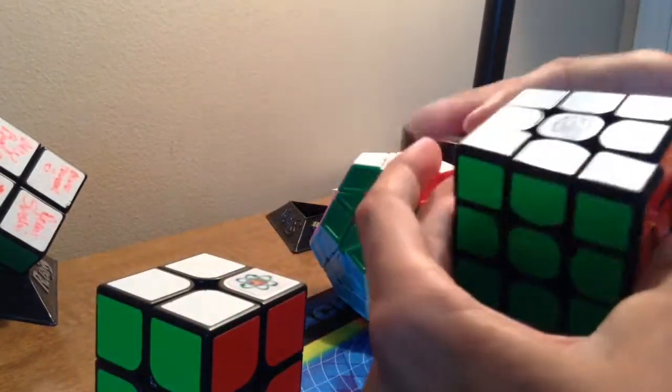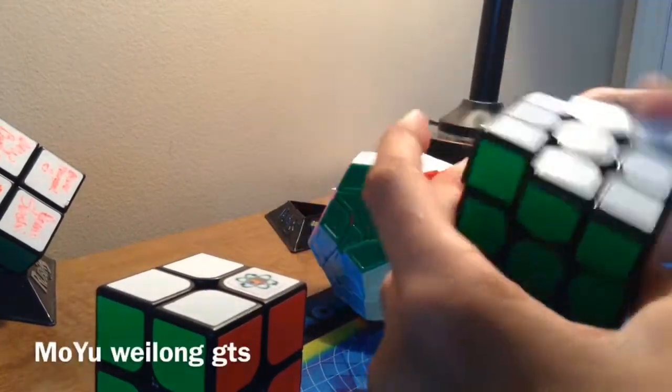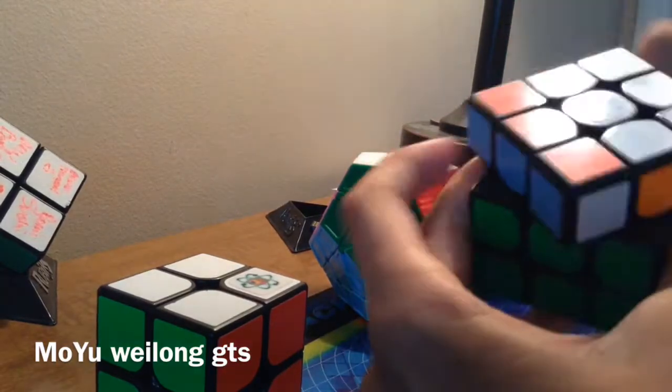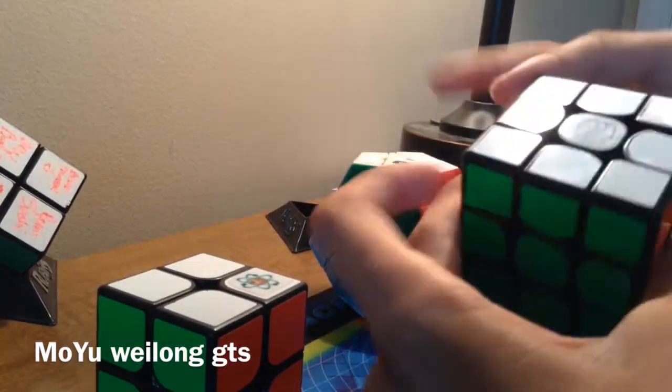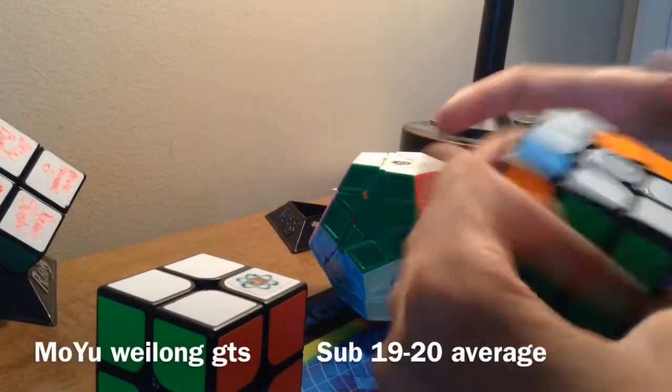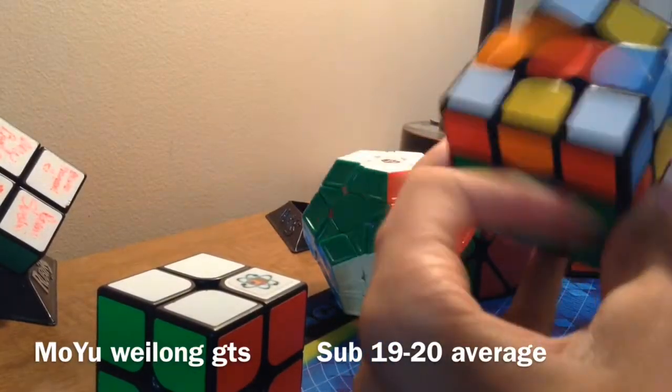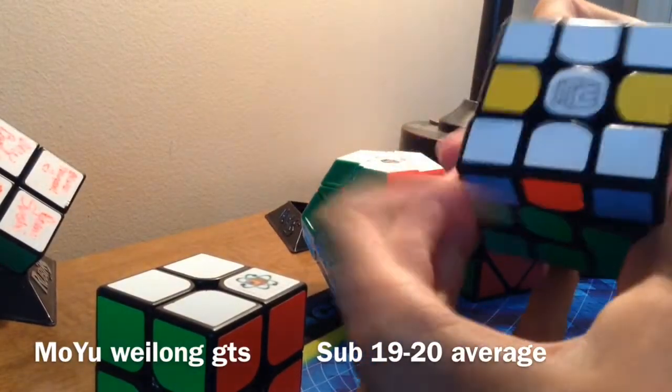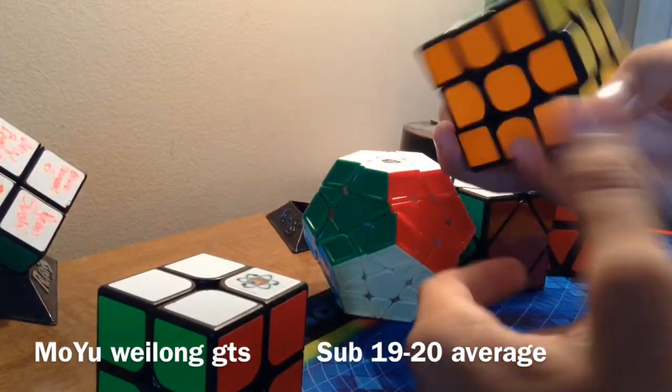Next is 3x3. This is the Moyu Weilong GTS. I'm hoping for probably a sub-20 average. I've not been doing the best lately. Maybe a sub-18 single. Maybe a sub-19 average. I don't know.